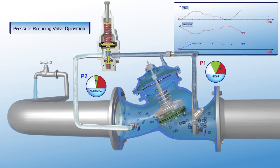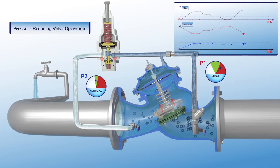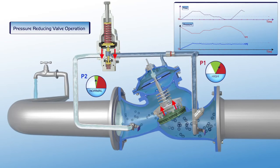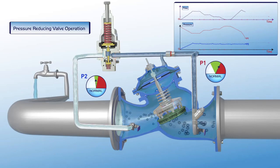At this stage, P1 upstream pressure decreases and there is a slight reduction of flow, but P2 downstream pressure remains stable within its green zone settings as shown on the chart.